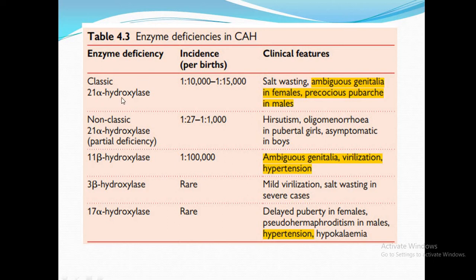To summarize the three most important enzyme deficiencies: 21-alpha hydroxylase causes ambiguous genitalia in females and precocious puberty in males due to increased testosterone, with normal blood pressure. 17-alpha hydroxylase causes hypertension with normal androgens, leading to delayed puberty in females and pseudohermaphroditism in males.